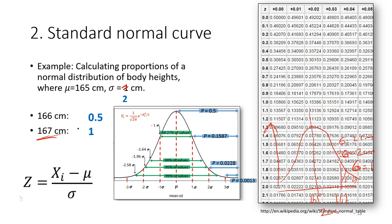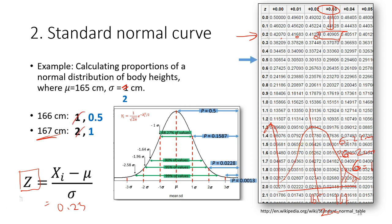After calculating the z-value, we refer to the standard normal table. For example, if the z-value is 0.23, we go to the first column and find 0.20, 0.21, 0.22, 0.23 to get the probability. For z=0.5 we get one probability value, and for z=1 we get another probability value.